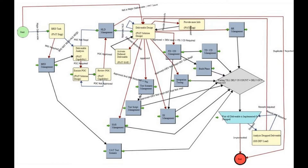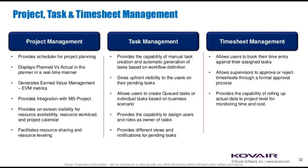Kovair ALM, with capabilities like task-based workflow coupled with notification and business rules, enables organizations to implement and enforce centralized governance across all the phases of a project lifecycle. This leads to the elimination of manual handoffs between teams, cost reduction, process automation across various lifecycle phases, and enhanced product quality by ensuring compliance with different industry standards.